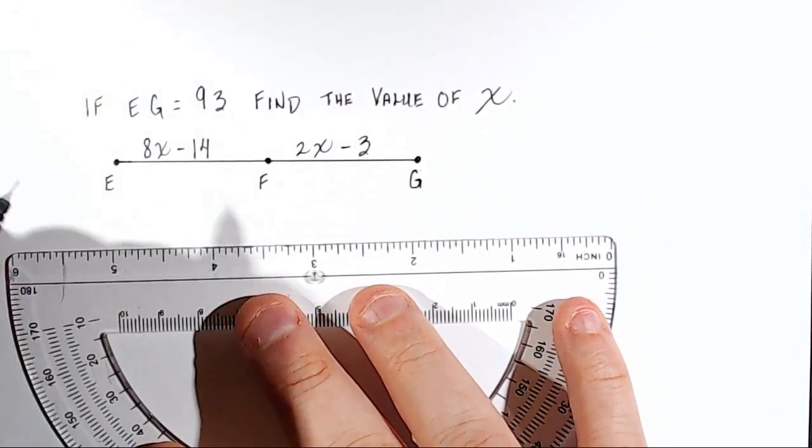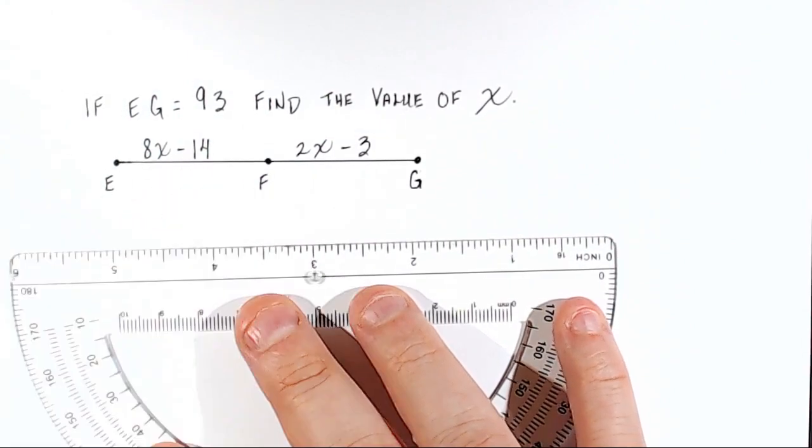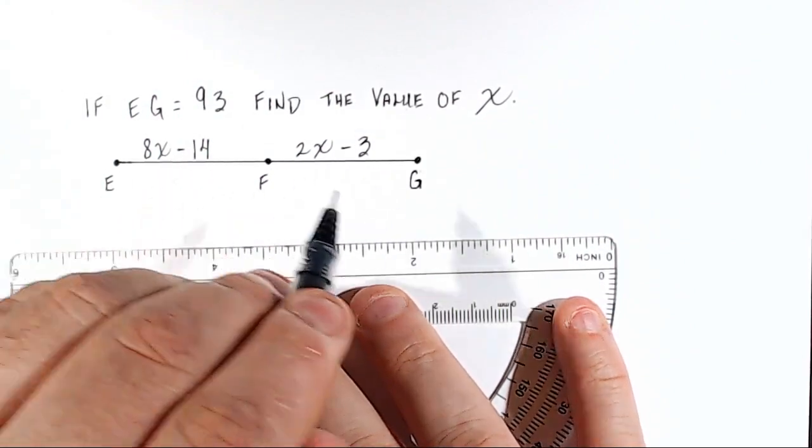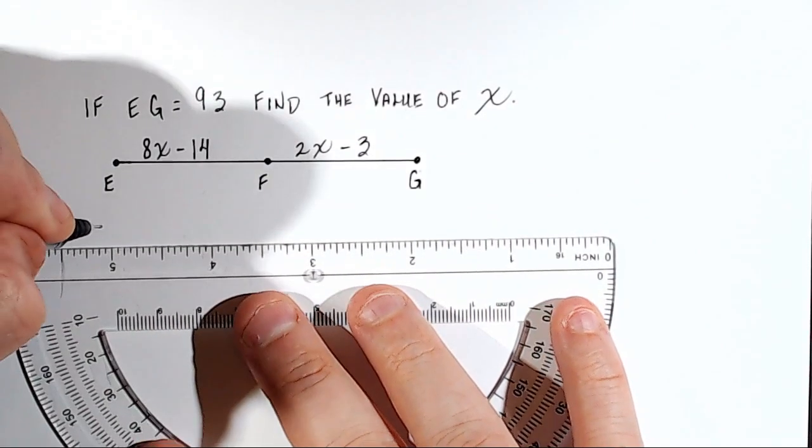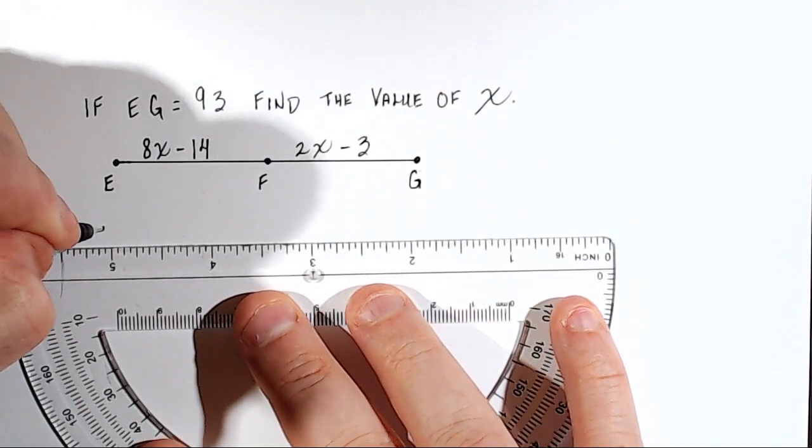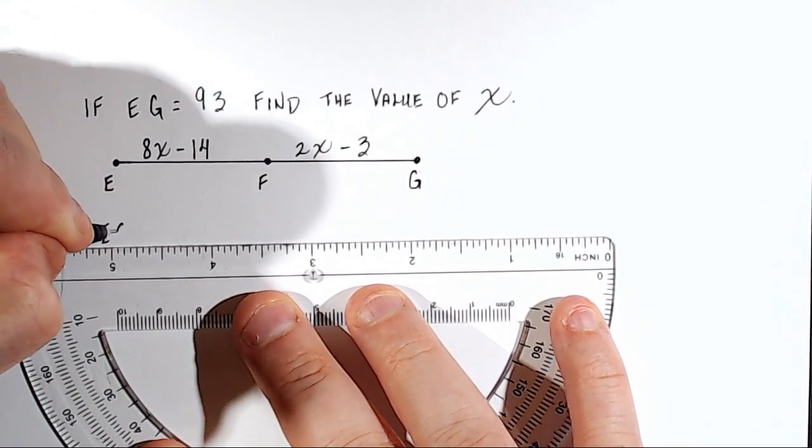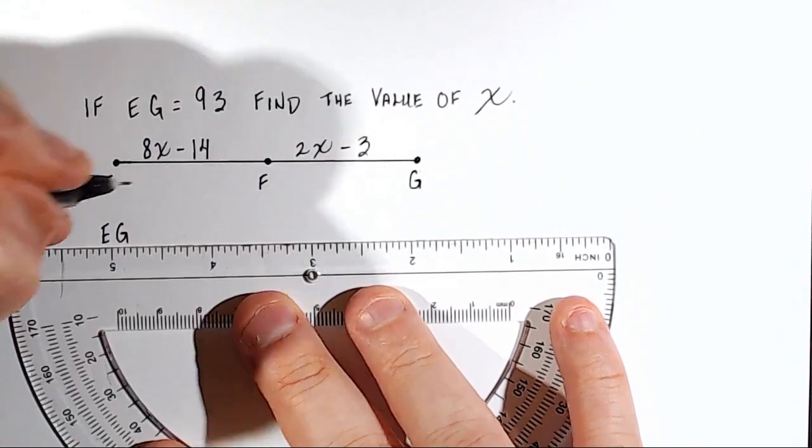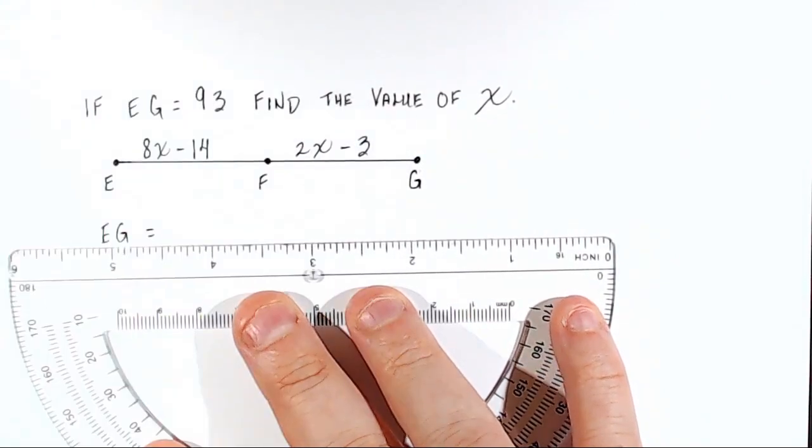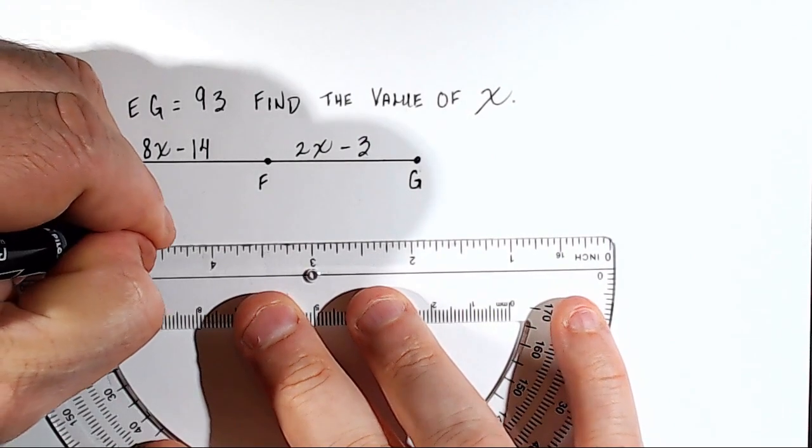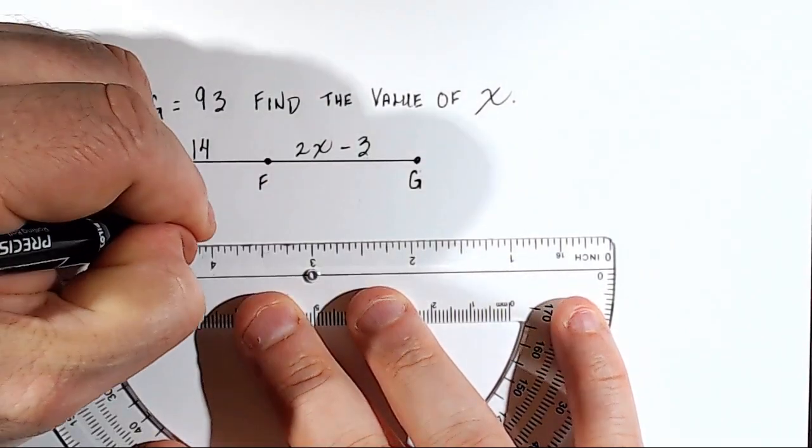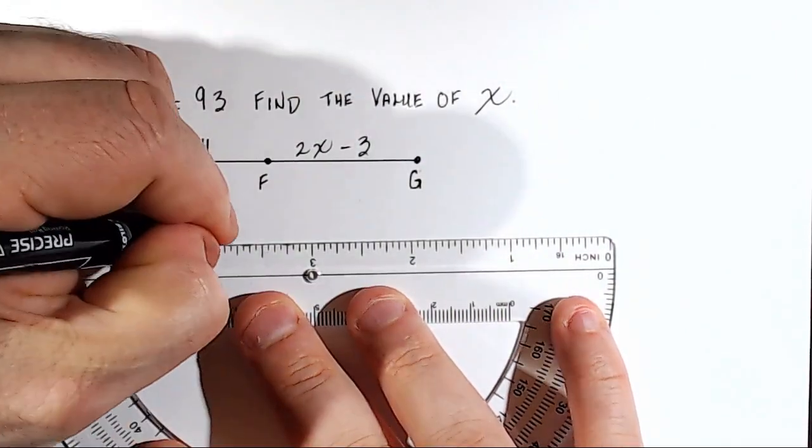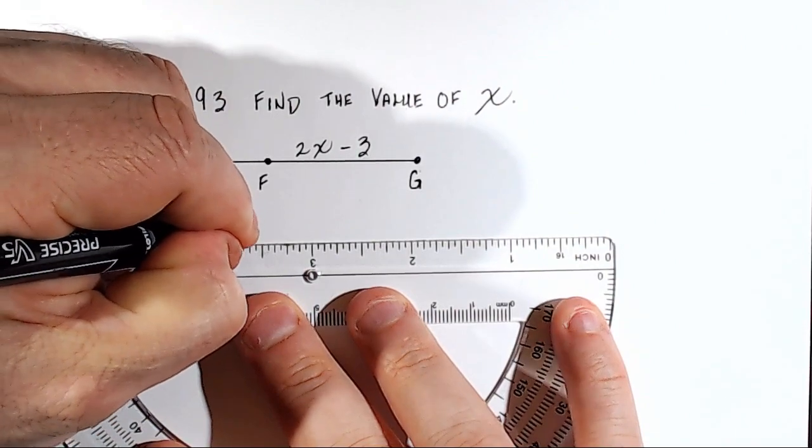All right, so EF is equal to 8X minus 14, and FG is equal to 2X minus 3. So we have to add these two segments. We can say segment EG is equal to the sum of segment EF plus segment FG.